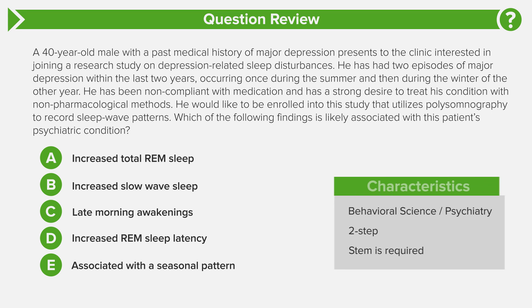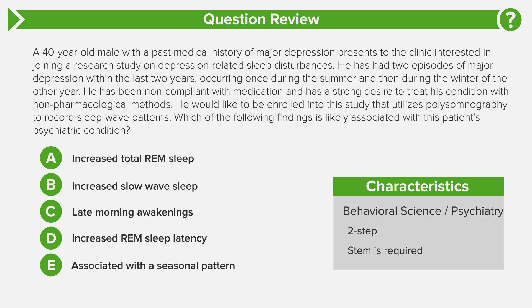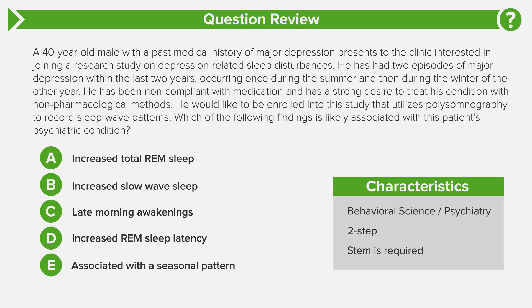Now let's go through the question characteristics. We have a patient with major depression — this classically falls under behavioral science and psychiatry. This is a two-step question, meaning we have to first come to a conclusion and then go one step deeper to arrive at the correct answer choice. We need to use the full stem, not just the last sentence, and rely on the components of the clinical vignette.